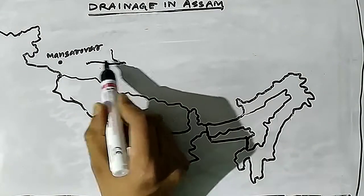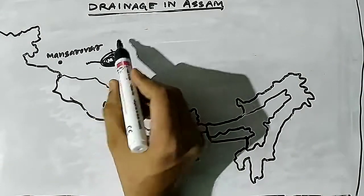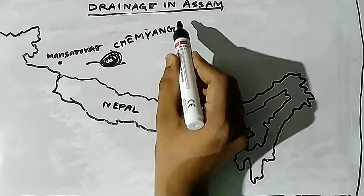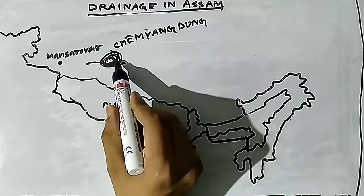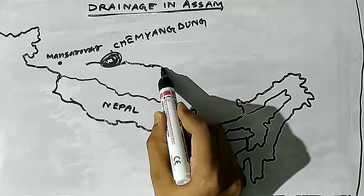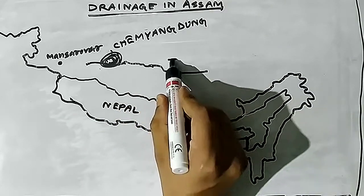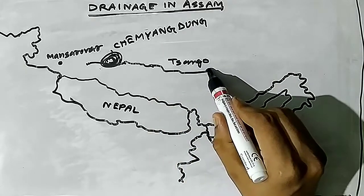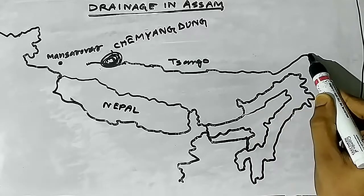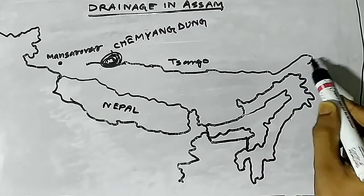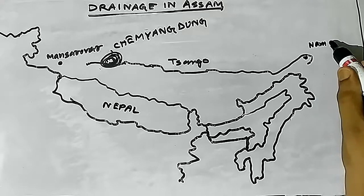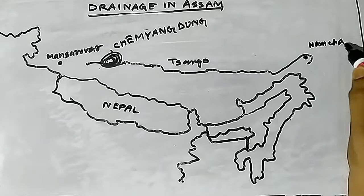The river mainly originates from a glacier called Chemyangdung, near Mansarovar. Different scholars have given different ideas regarding the emergence of Brahmaputra, but the most accepted view is that it emerges from Chemyangdung. From Chemyangdung, the river flows eastward under the name Sankpo, then it takes a U-turn around a high Himalayan peak called Namcha Barwa.